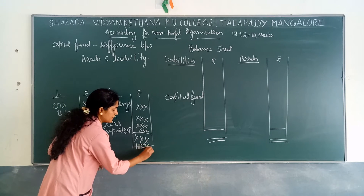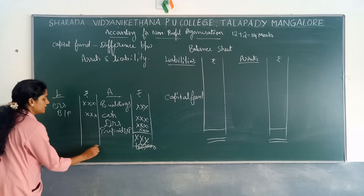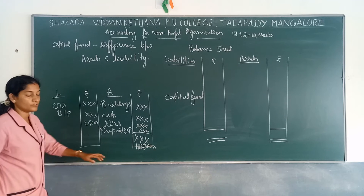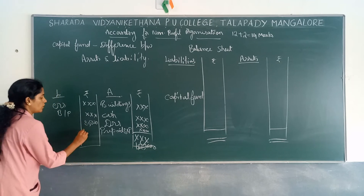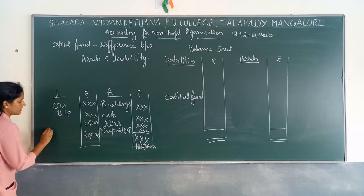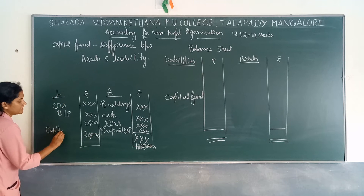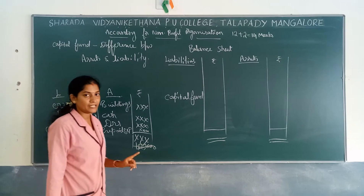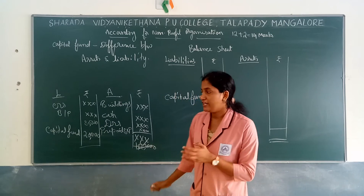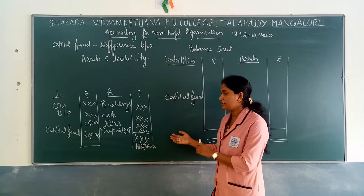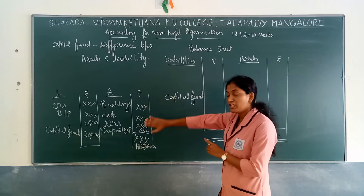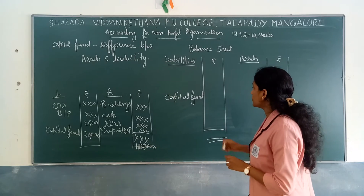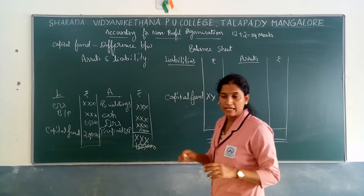For example, if the assets side totals 1 lakh and the liabilities side totals 80,000, then 1 lakh minus 80,000 equals 20,000, which is considered as the Capital Fund. Capital Fund is calculated at the beginning of the year, not at the end of the year — it is the opening balance sheet figure.